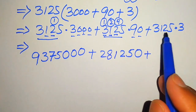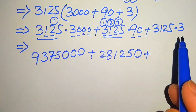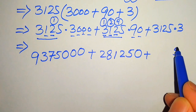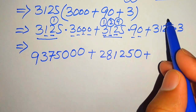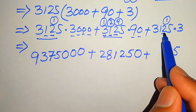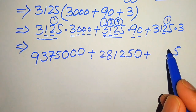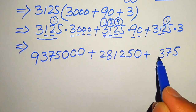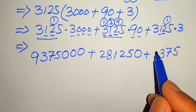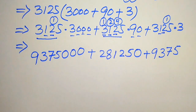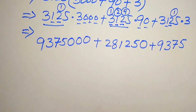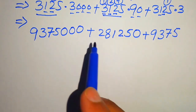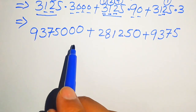For 3125 multiplied by 3: 3 fives are 15 write 5 carry 1, 3 twos are 6 plus 1 is 7, 3 ones are 3, 3 threes are 9. This gives 9,375.